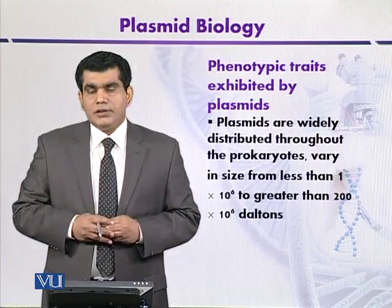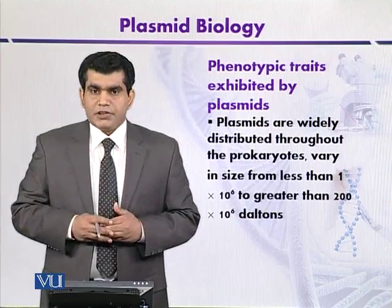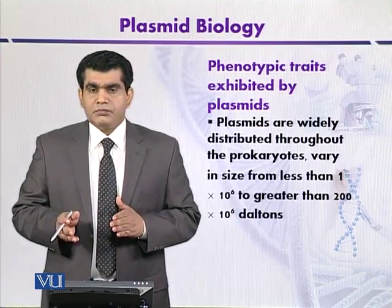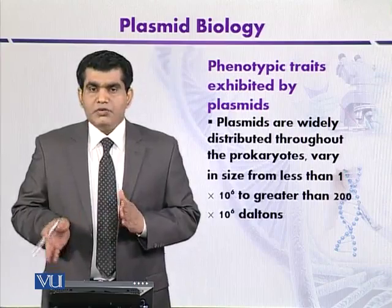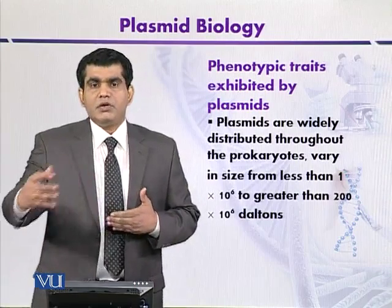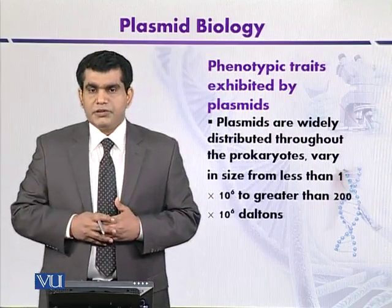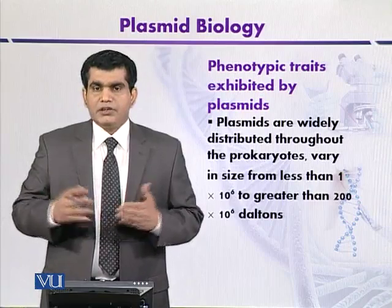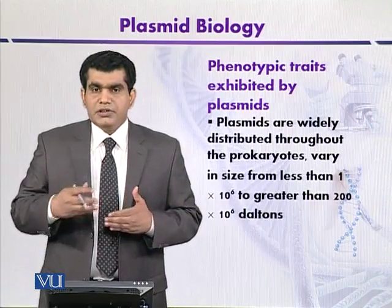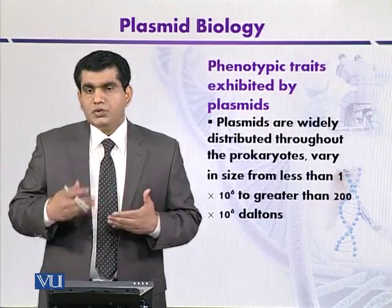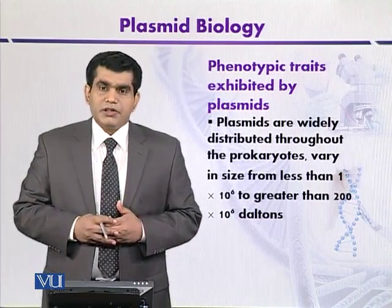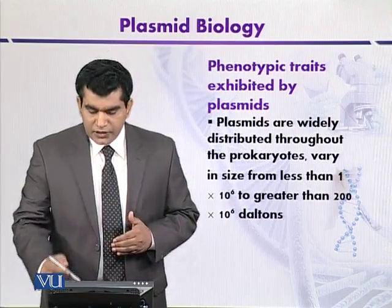Overall, the size of the plasmid may range from a few base pairs to several thousand base pairs, and its molecular weight may be 1×10⁶ to 200×10⁶ Daltons.